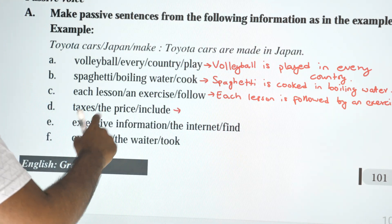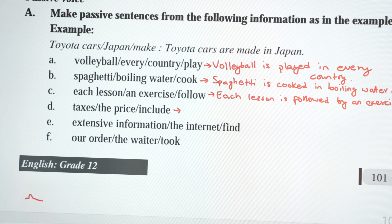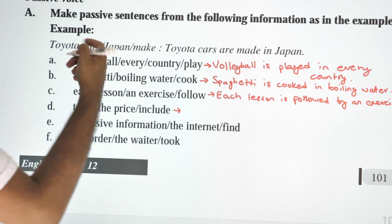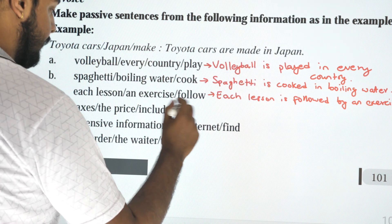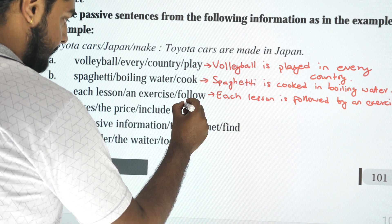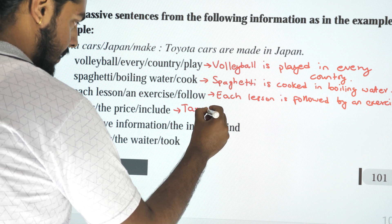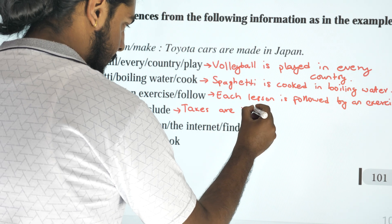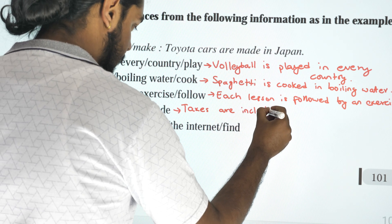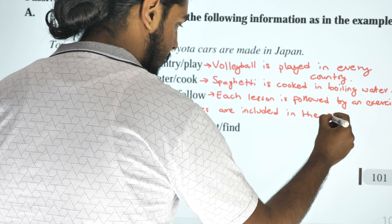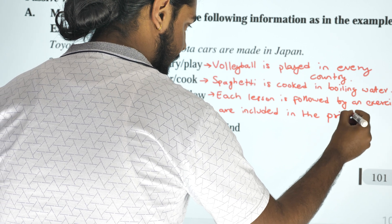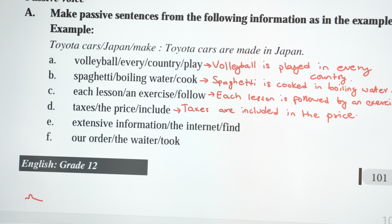Taxes — the price — include. So, taxes are included in the price. Taxes is plural, that's why we use 'are included'. So, taxes are included in the price.